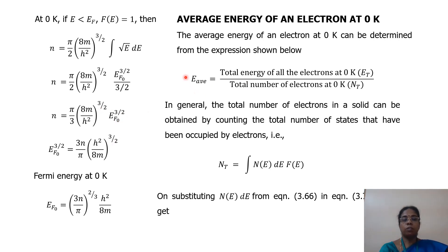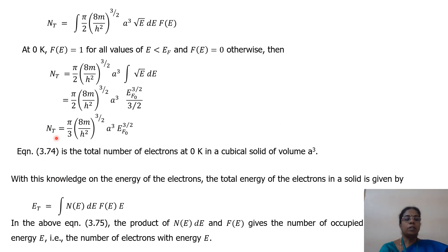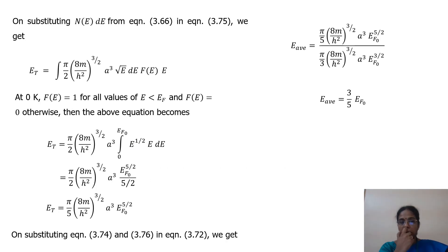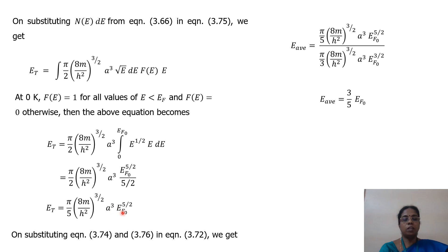Now using all this, we find the average energy of the electron at 0 Kelvin, which equals the total energy of all electrons at 0 Kelvin divided by the total number of electrons. The number of electrons is given by the integral of N(E) × F(E). The total energy ET = (π/5) × (8m/h²)^(3/2) × L³ × EF^(5/2), obtained by integrating with F(E) = 1 and simplifying.